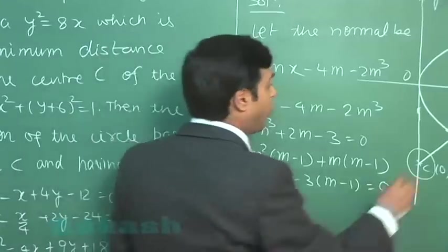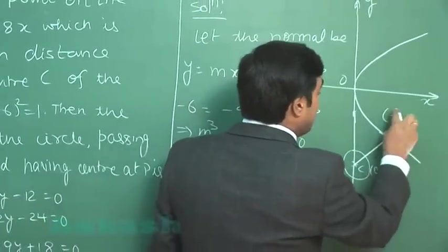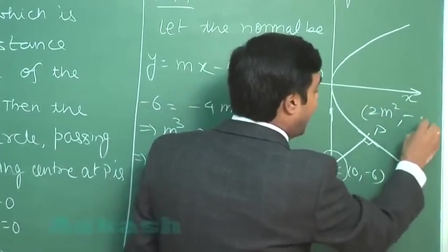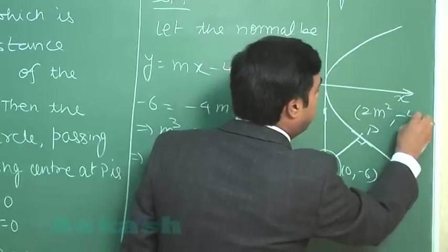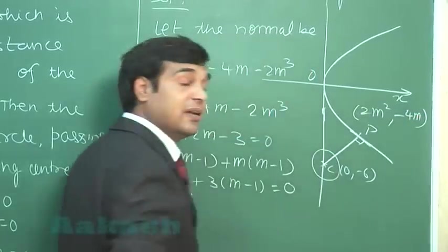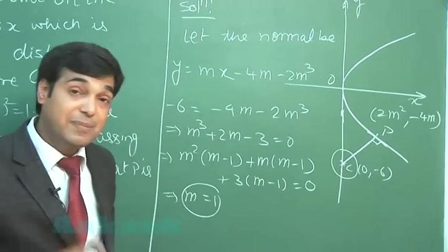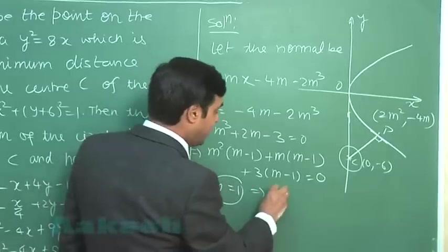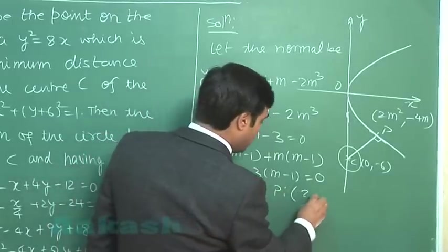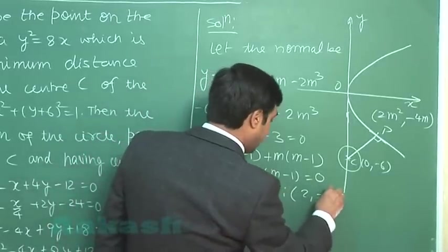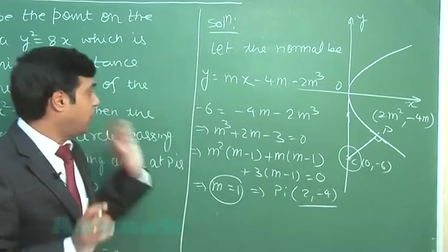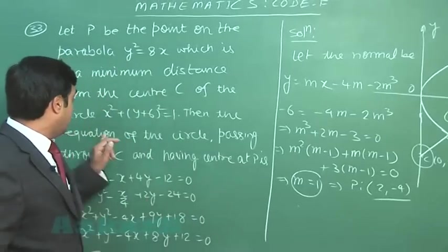Hence we can write here the point P which is (2m squared, -4m) is the point of contact. So on substituting m as 1, we get point P as (2, -4). This point is clear.